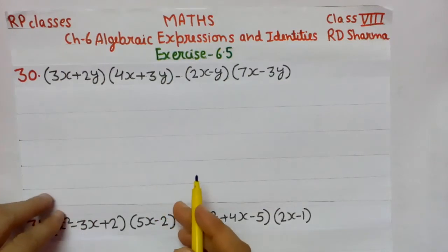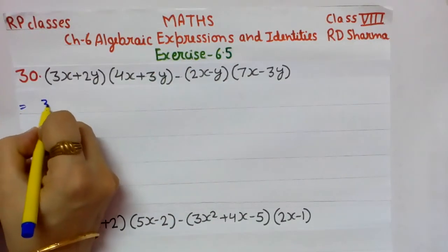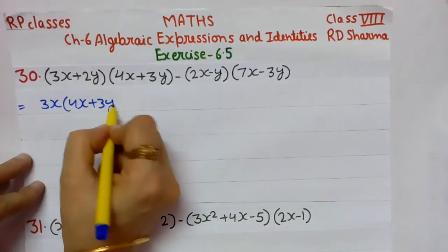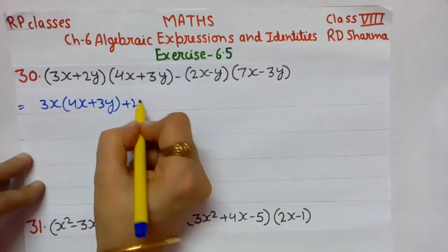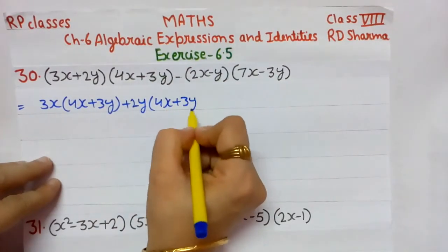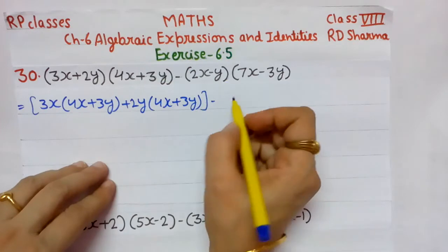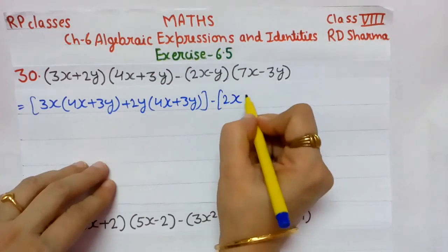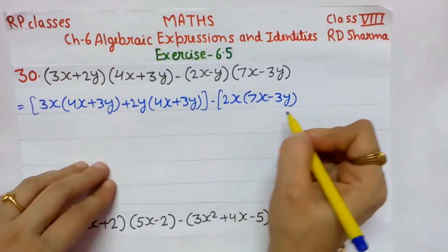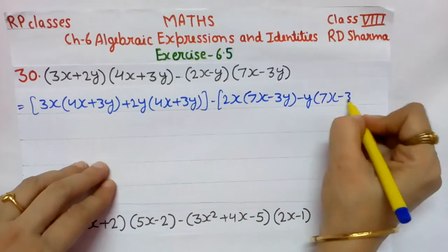Students, we will use the Distributive Property. First I am breaking the first bracket: 3x from the first bracket multiplied by the second bracket (4x + 3y), plus 2y from the first bracket multiplied by the second bracket (4x + 3y). Now, 2x from the first bracket multiplied by (7x − 3y), minus y from the first bracket multiplied by (7x − 3y).